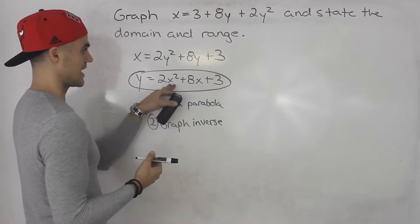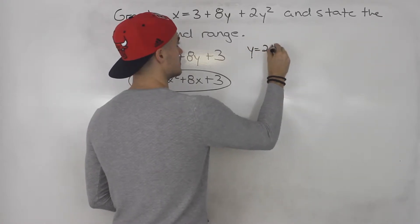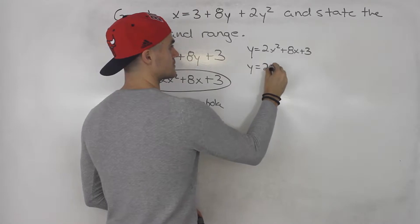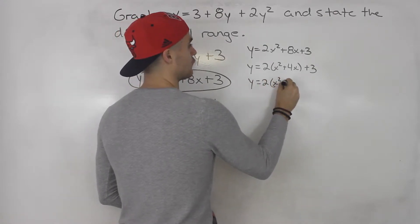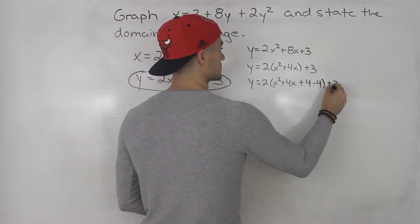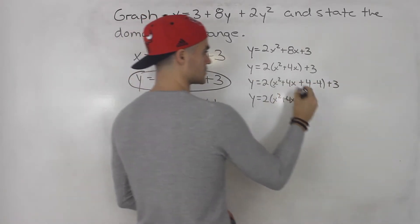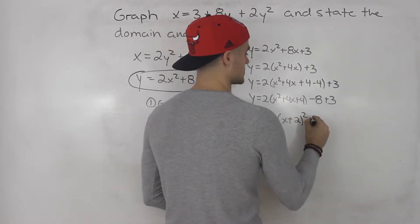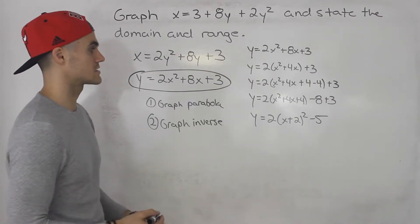Let's first take this parabola and put it into vertex form. We have y equals 2x squared plus 8x plus 3. Completing the square: factor out 2 to get 2(x squared plus 4x) plus 3. Half of 4 is 2, squared is 4, so we add and subtract 4 inside: 2(x squared plus 4x plus 4 minus 4) plus 3. Taking the minus 4 out of the bracket gives minus 8, plus 3 equals negative 5. So the vertex form is y equals 2(x plus 2) squared minus 5.